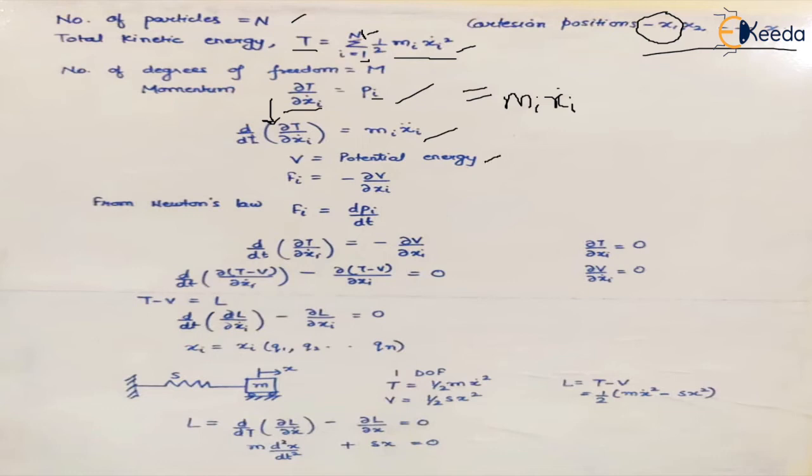If we denote potential energy with V, in the conservative force field, the force on the particle can be given by the derivative of potential energy at the particle position. It will be given by minus the derivative of this potential energy with respect to the desired direction. If you apply Newton's law, force equals rate of change of momentum. This is how we write Newton's law with respect to time.